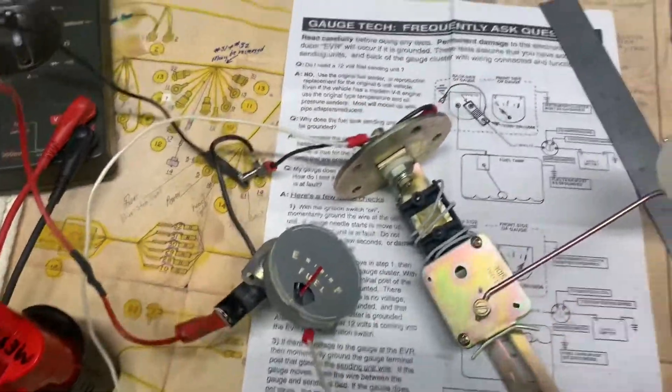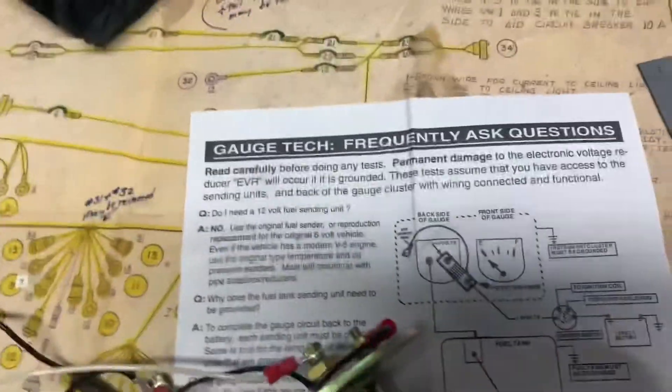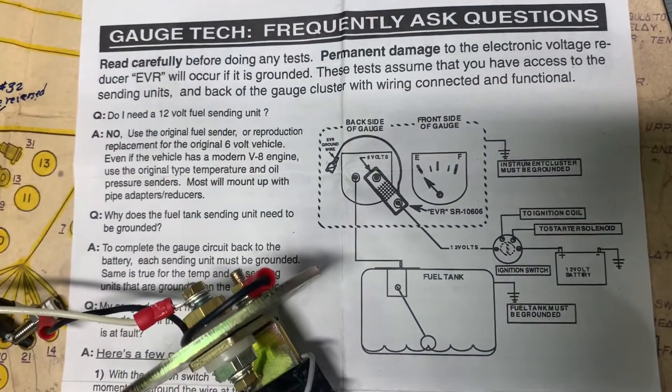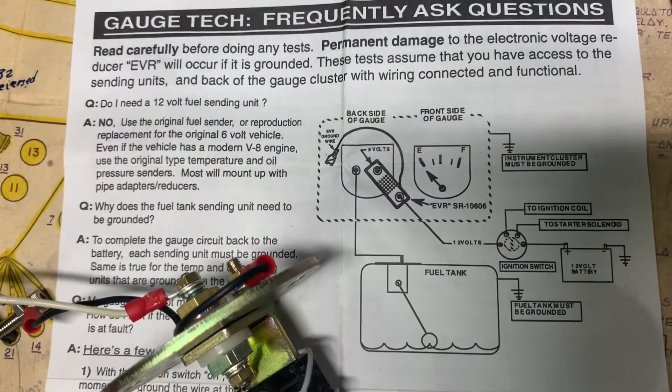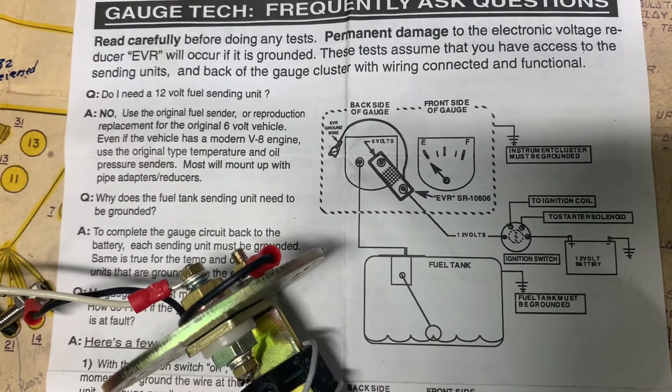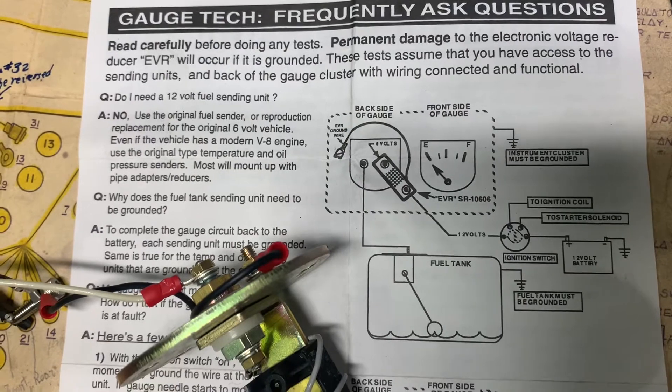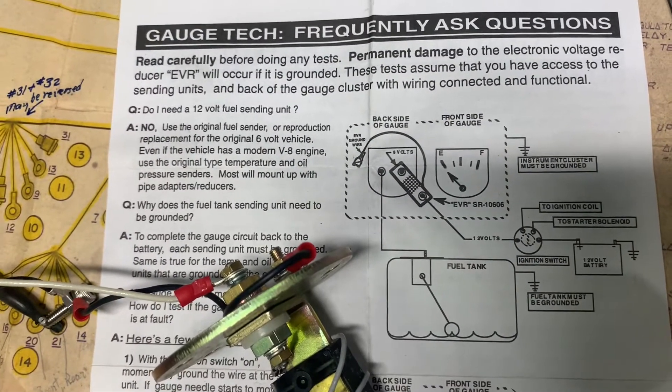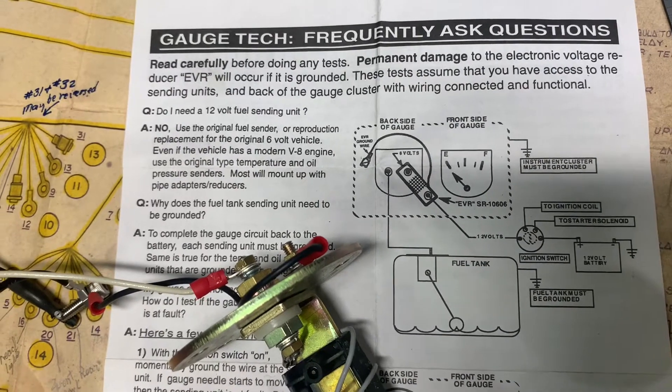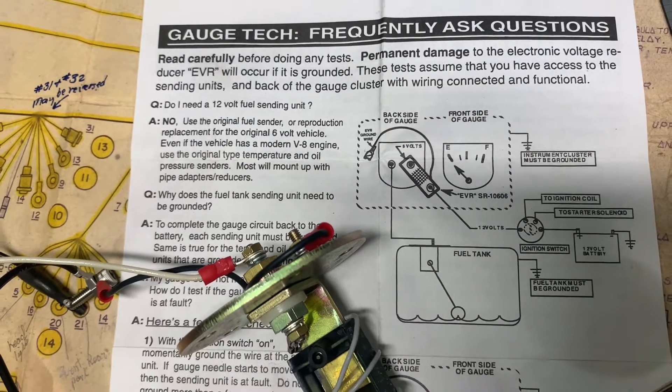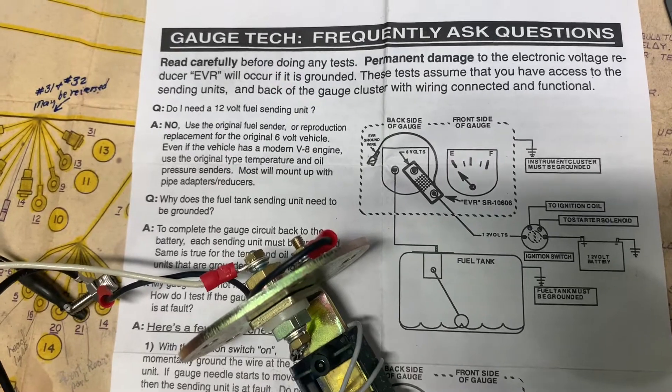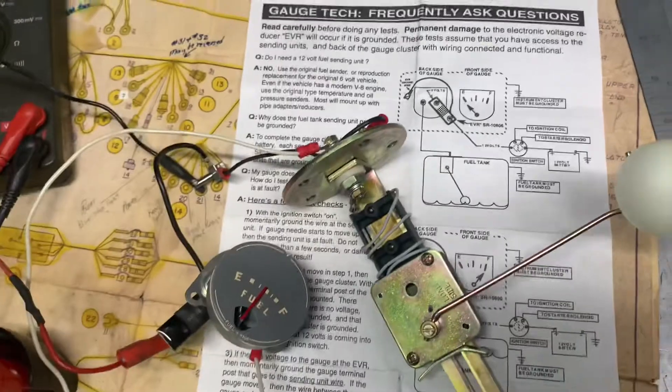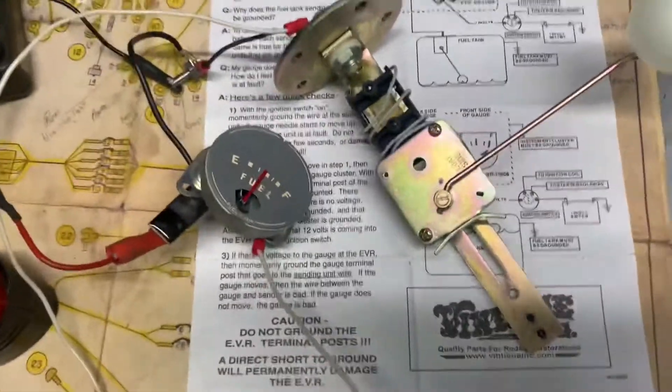I've got this all set up here. If you care to look at it, here's the diagram that I used. You can see electronic voltage reducer hooked to the back of the gauge and grounded, the battery connected to the voltage reducer going through the ignition switch, and then the tank sending unit which is grounded, and the output of the sending unit going to the other side of the gauge.